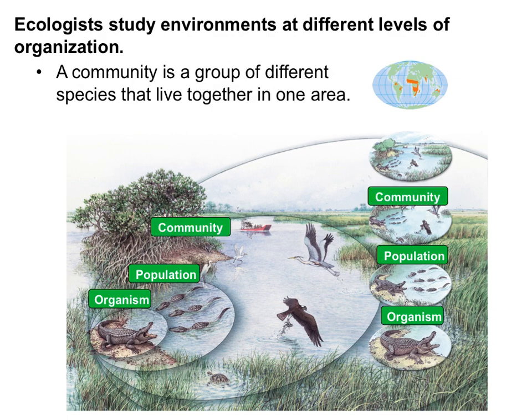The next level out is a community. It is a group of different species that live together in one area. So if we're looking at the swamp, we can say there are turtles, fish, eagles, cranes, grass, trees, and all these organisms that are going to make up the community of the swamp.